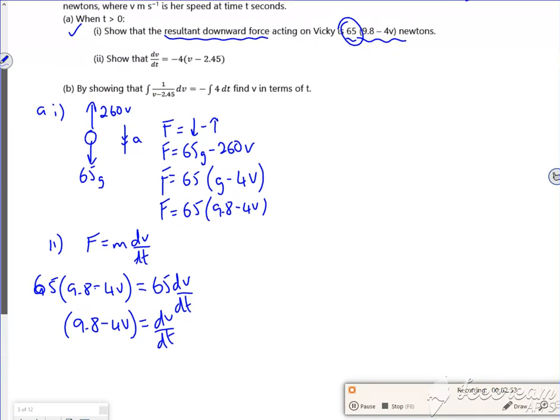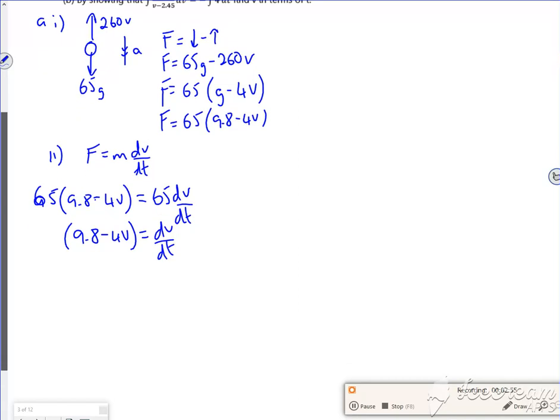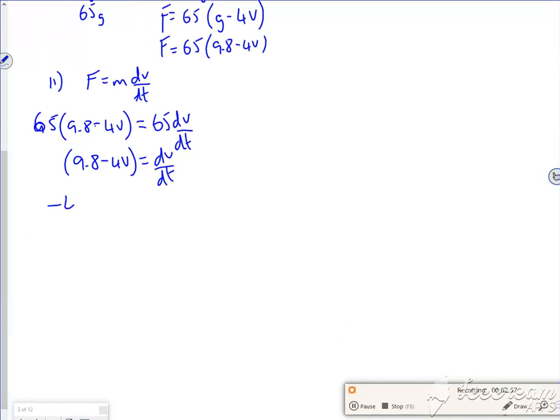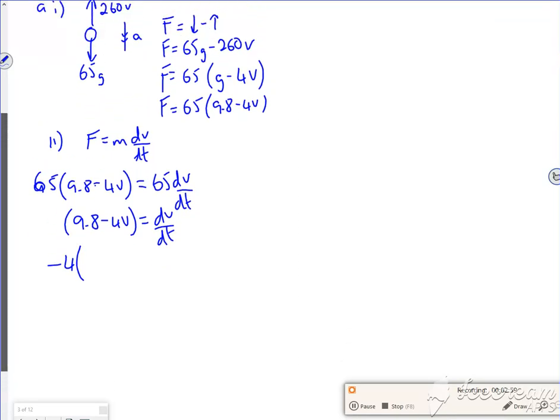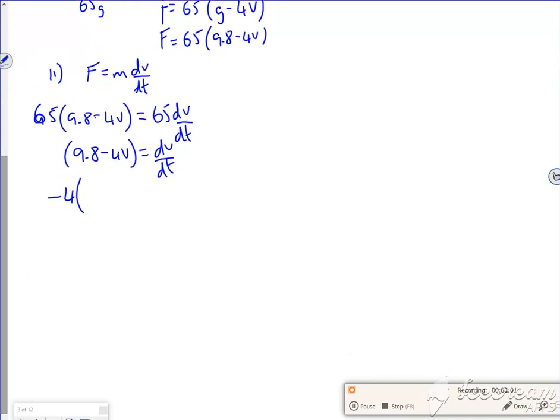Right, so what am I aiming towards? Oh look, they've taken out a minus 4 haven't they? Minus 4. I guess 9.8 divided by 4 is 2.45. There you go, I've got what they want. Perfectly. Right, part B then.